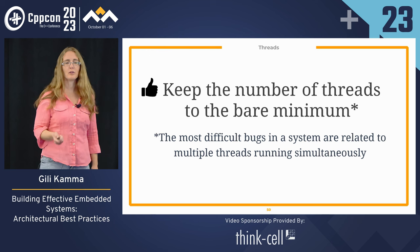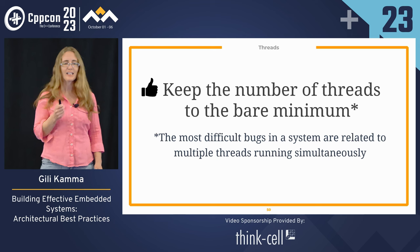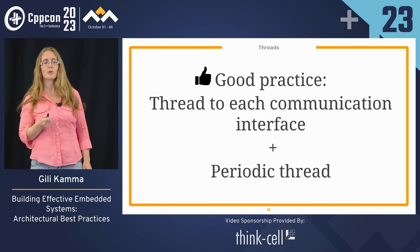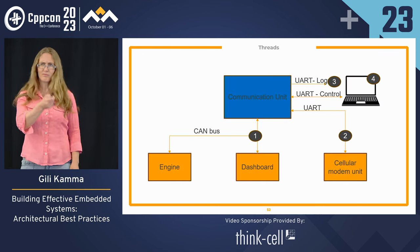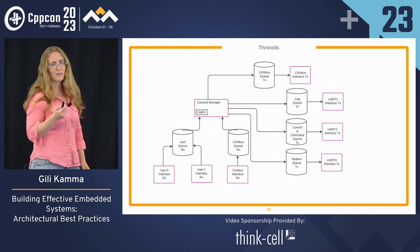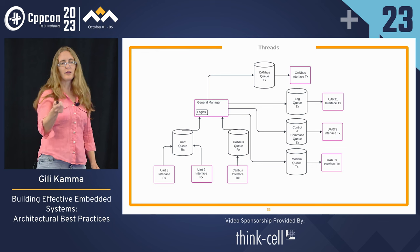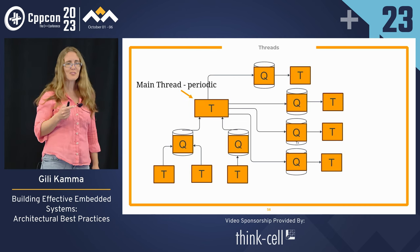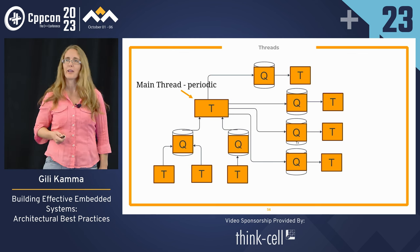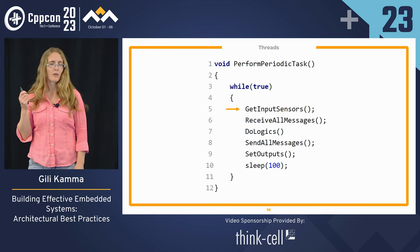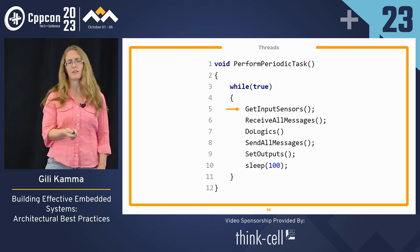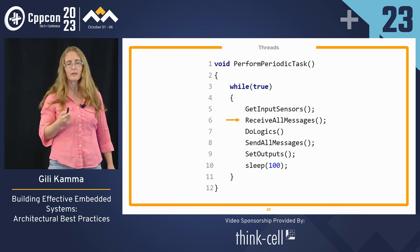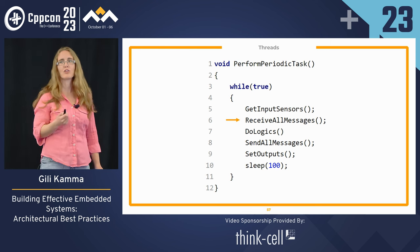In general, keep the number of threads to the bare minimum. The most difficult bugs in a system are related to multiple threads running simultaneously. A good practice is: one thread per communication interface, plus a periodic thread. This is our system. When I draw it with rectangles as threads and cylinders as queues, let's zoom into the main thread — the periodic thread. It runs periodically. The first thing it does is get input sensors, then receives all messages waiting in the queues, goes over all the queues to see if there are messages to handle.